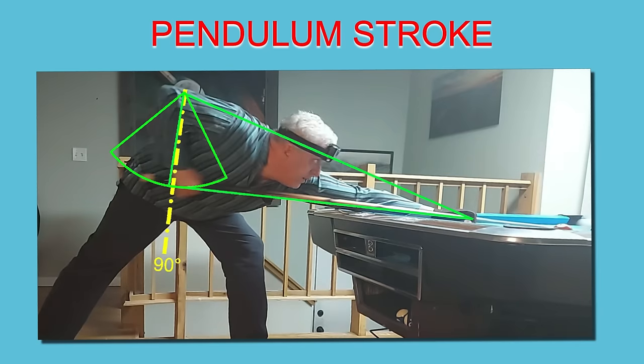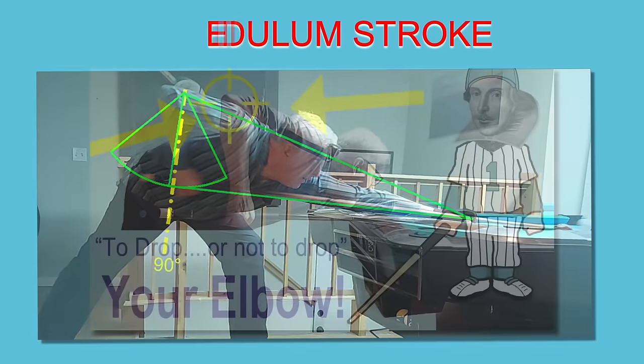Compare to this image of the good stroke, where the cue ball is already gone, but the grip hand has only just now reached the starting position of the miscue stroke.